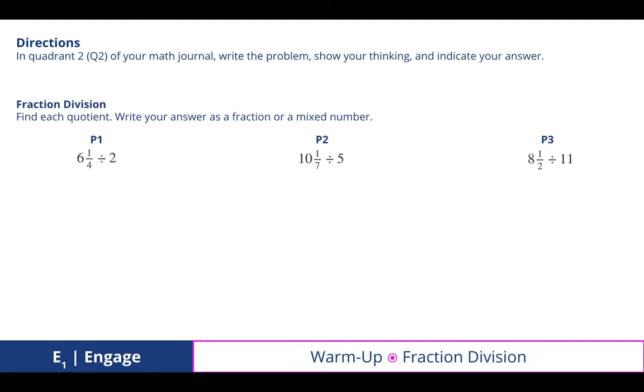In quadrant 2 of your math journal write the problem, show your thinking, and indicate your answer. We reviewed how to find quotients of mixed numbers. For 6 and 1/4 divided by 2, I can turn that into an improper fraction: 6 times 4 is 24 plus 1 is 25 over 4, and then multiply by 1 over 2, the opposite operation.